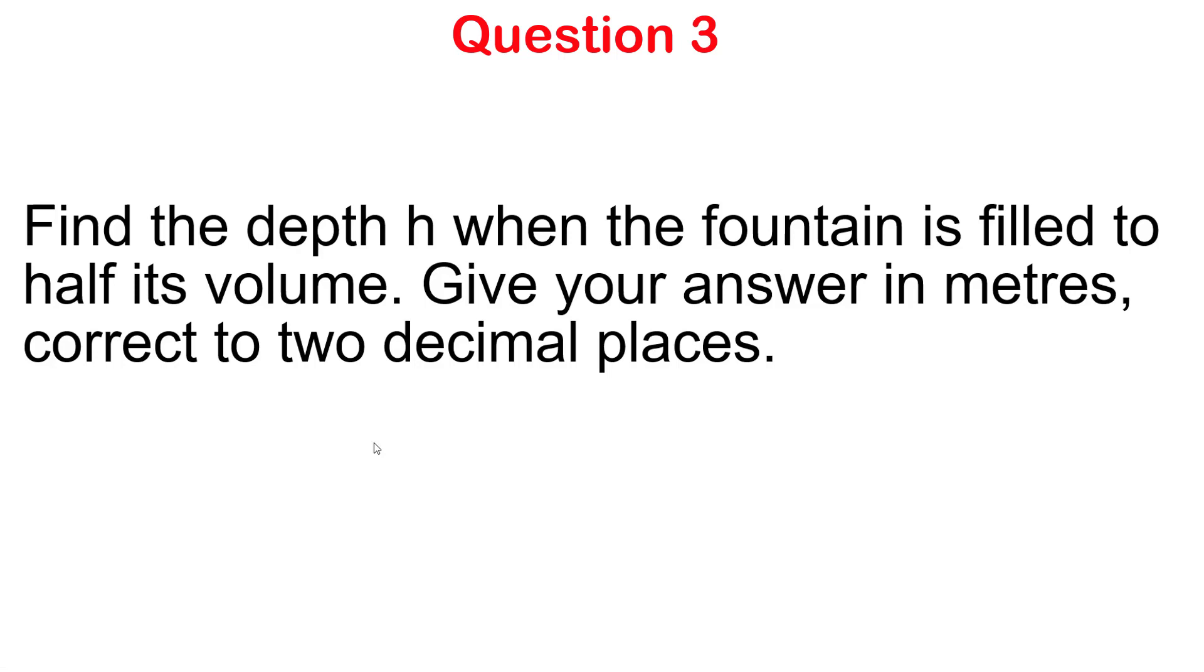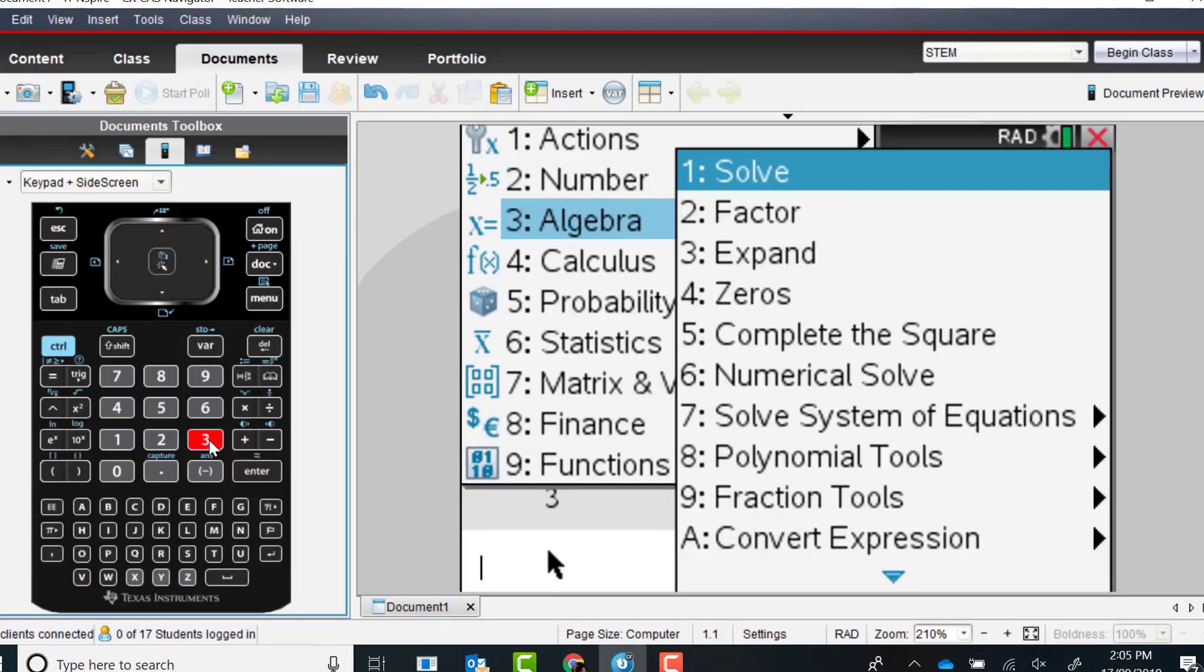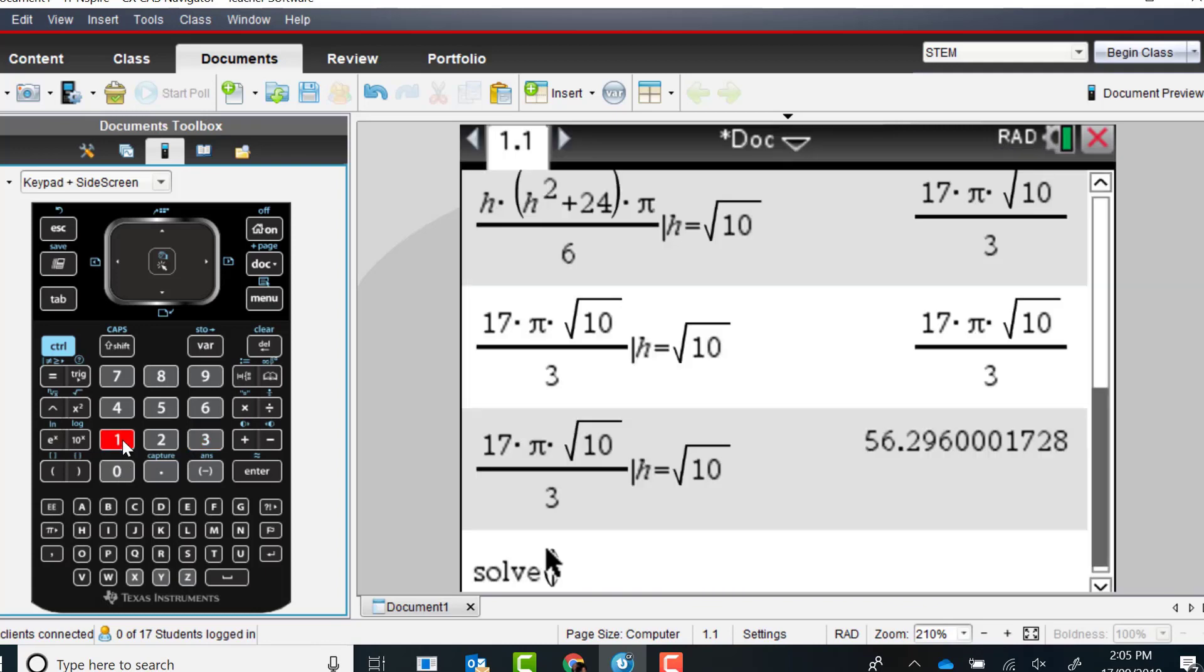Let's look at another part with the same question. Here we're trying to find the height when the volume will be exactly half of its maximum volume. On the previous screen we found the maximum volume was at root 10. We're going to use the solve feature. I'll put the equality sign, then the maximum volume which is 17 pi root 10 over 3, and divide that by 2 because we're looking for half the volume.